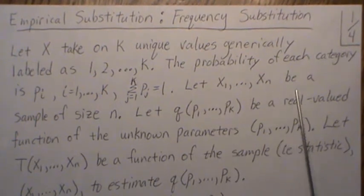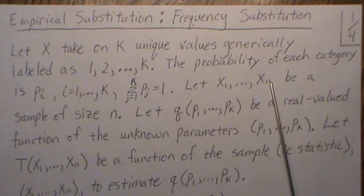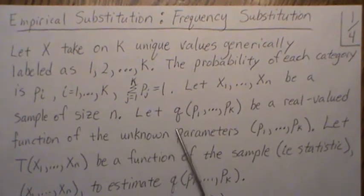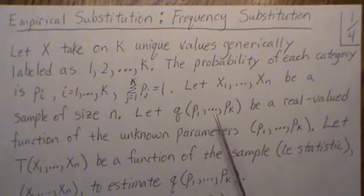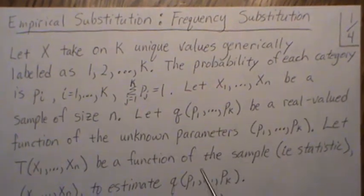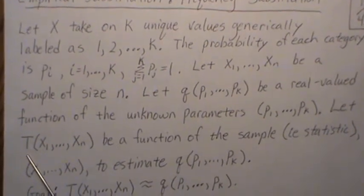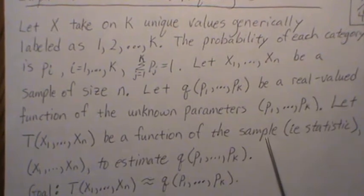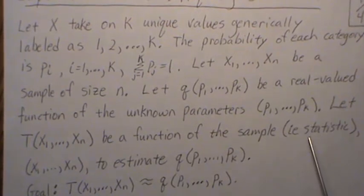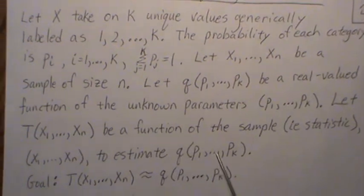Let x1 through xn be a sample of size n, where these values assume values 1 through k. Let q be a real-valued function of the unknown parameters p1 through pk. Let t be a function of the sample — i.e., a statistic — and this is what we want to use to estimate this function of the unknown parameters.